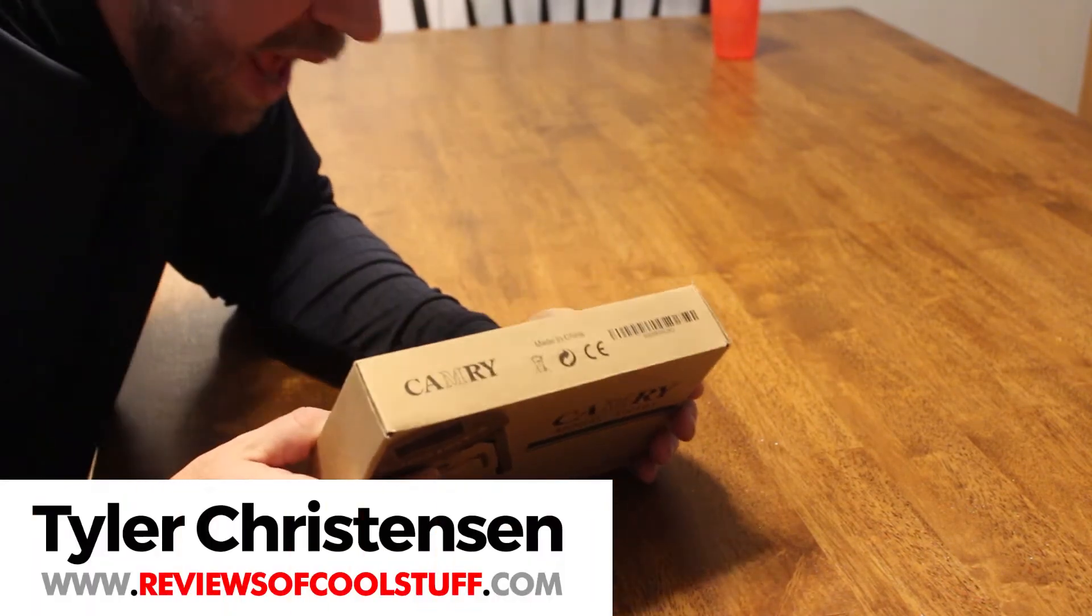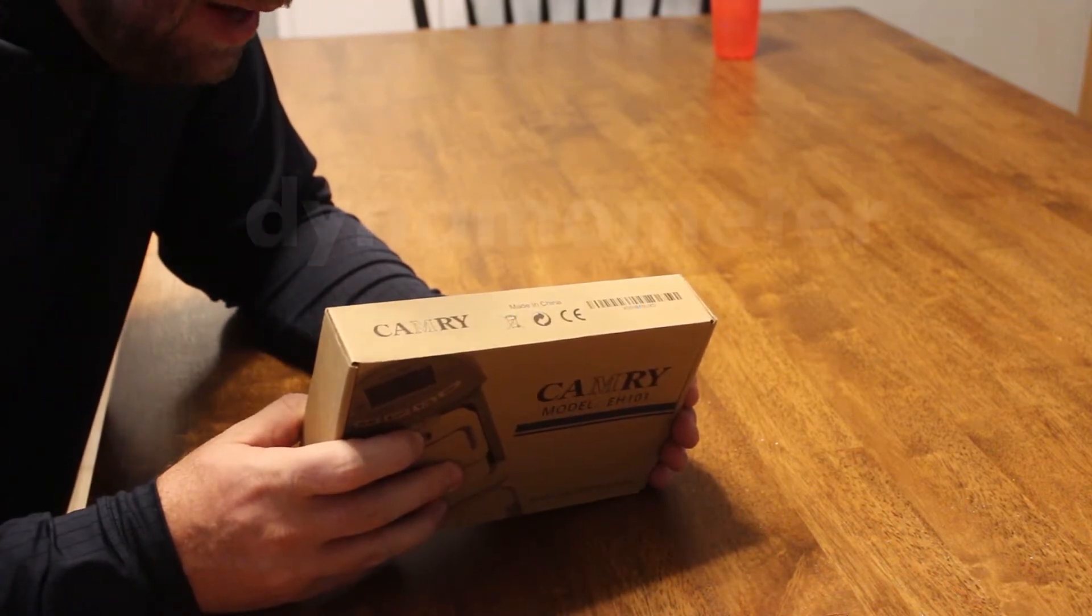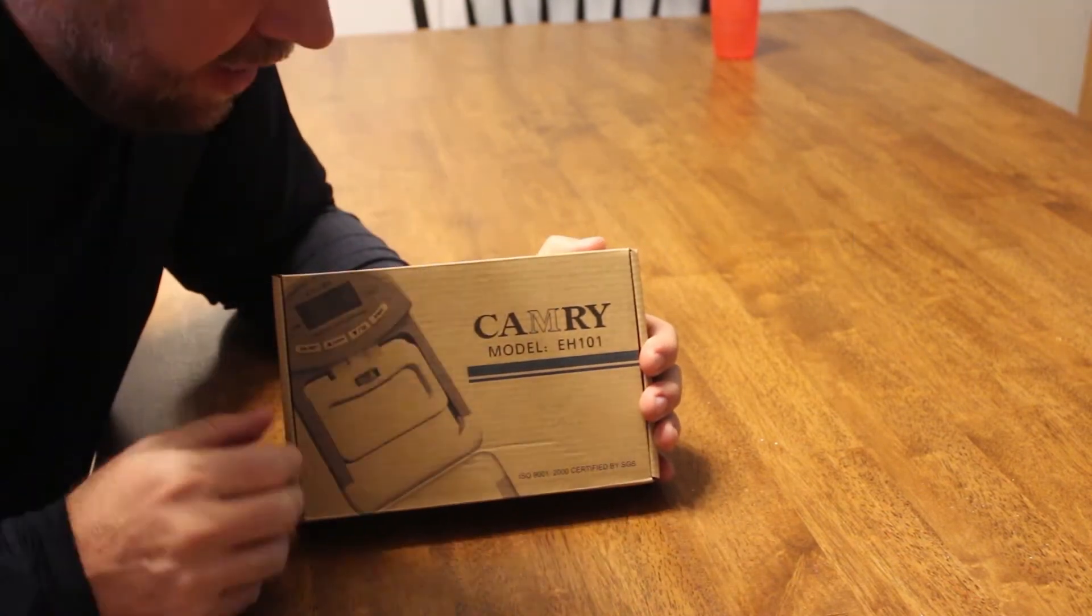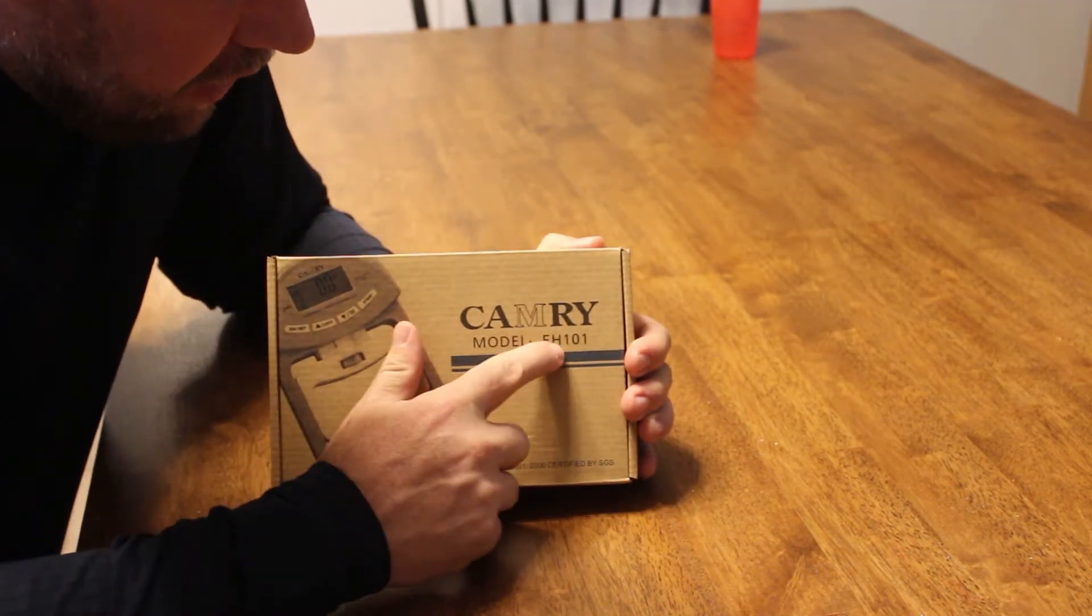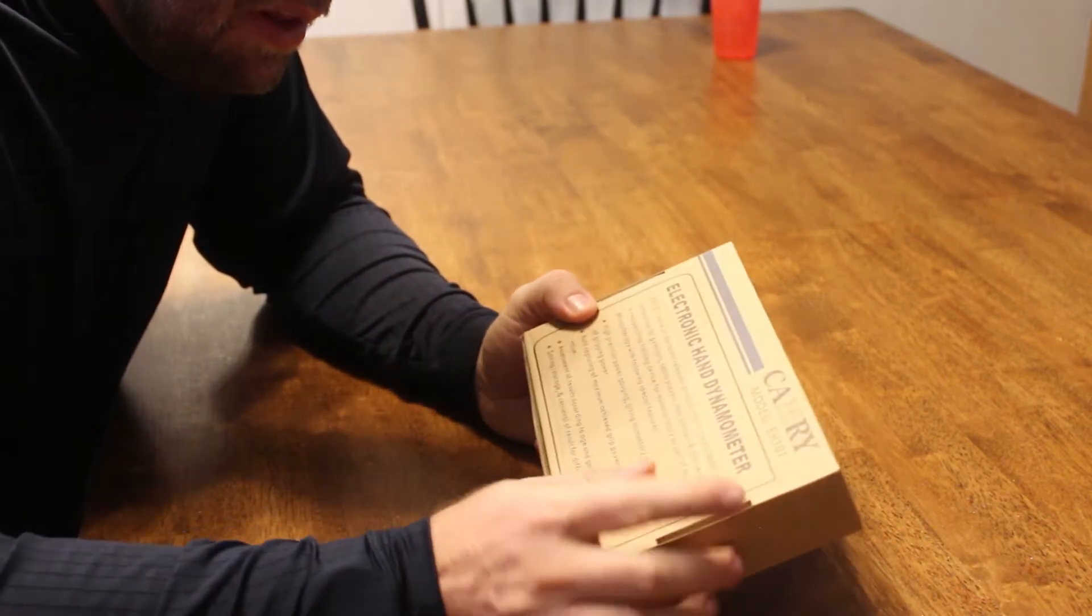This is called an electronic hand dynamometer. It's a squishy hand thing. And so this is model EH-101. And before I even pull it out of the box, it's got some things on the back.